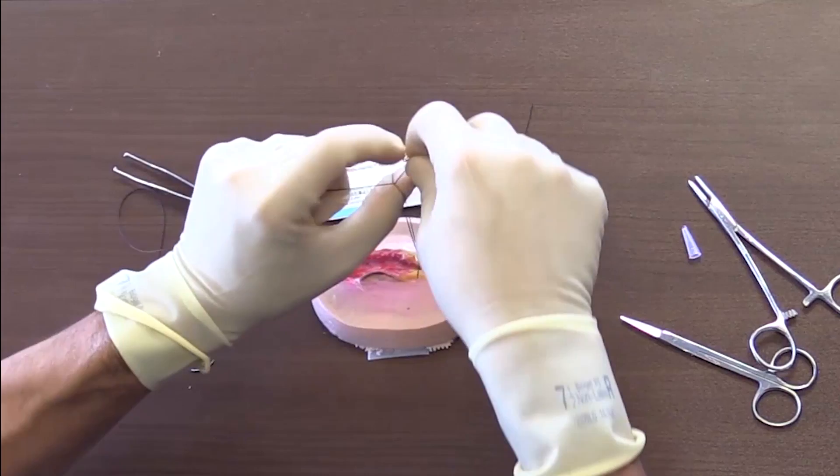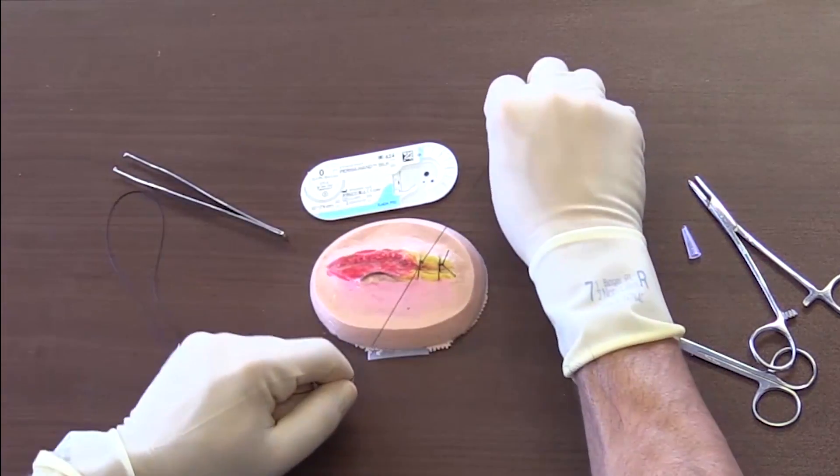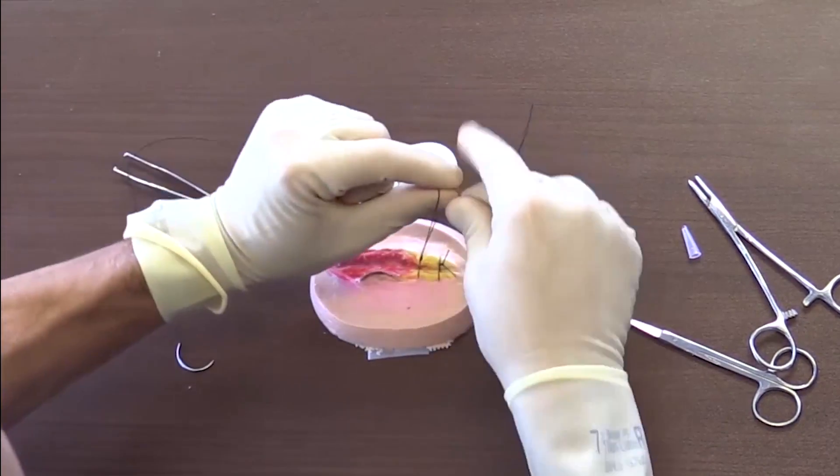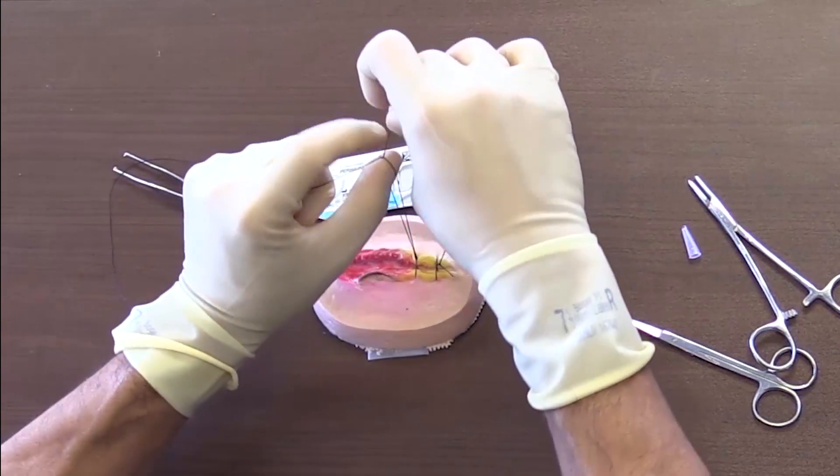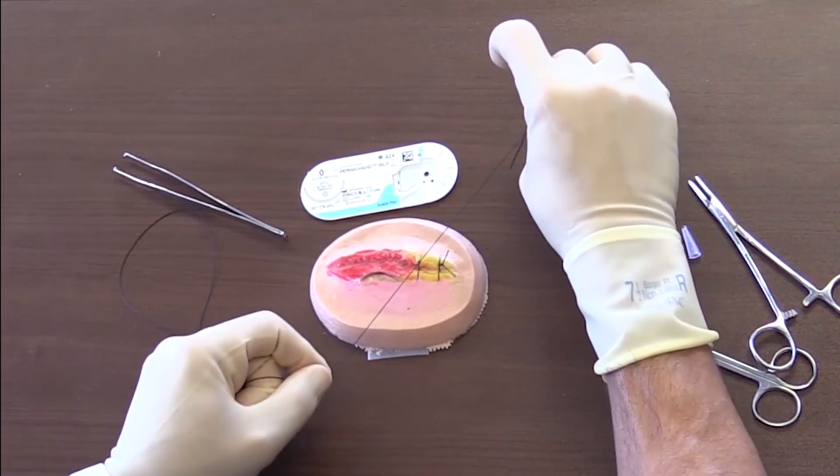Just kind of looping it, and then you want to cross hands. So this is your two-handed tie.